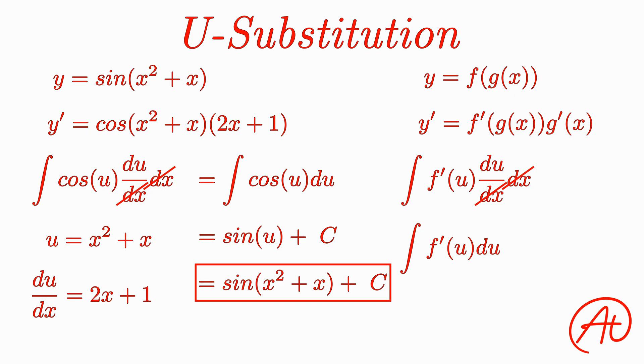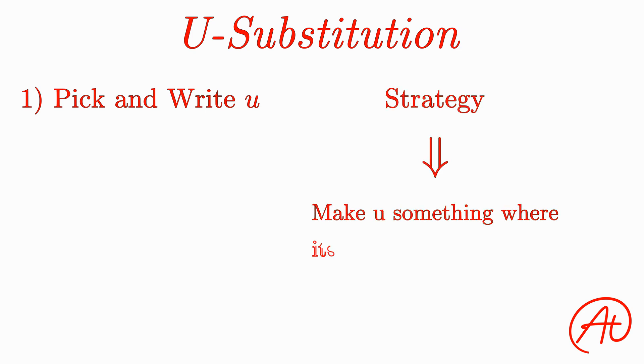Now this example is pretty straightforward because we already knew what to make our u. But how do we solve these in general when we don't know what the answer should be in the end? Well, our first step is to figure out what our u should be. Now this is the most difficult part of the process and requires some critical thinking. In general, you want to make your u something in the function that when you take the derivative of it, it cancels some other part of the function and leaves it looking a little simpler.